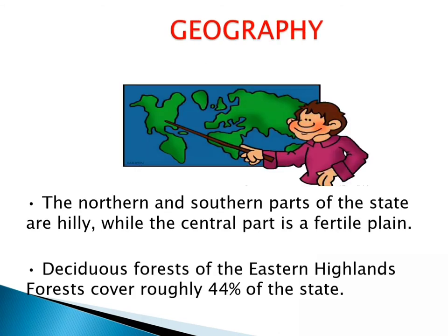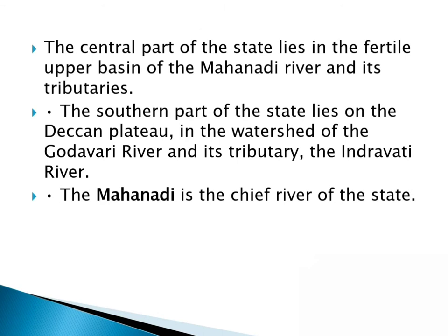Geography: The northern and southern parts of the state are hilly while the central part is a fertile plain. The central part lies in the fertile upper basin of the Mahanadi river and its tributaries. The southern part lies on the Deccan Plateau in the watershed of the Godavari river, its tributaries, and the Indravati river. Mahanadi is the chief river of the state.